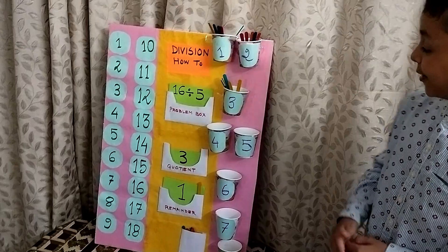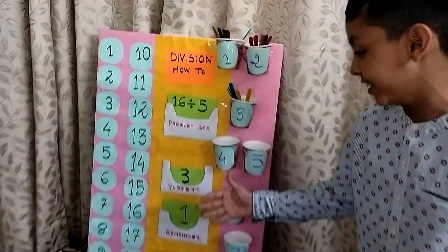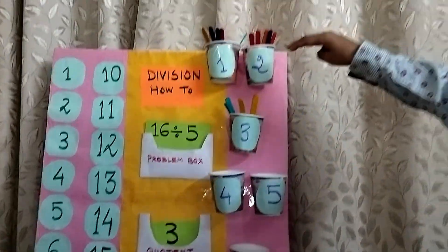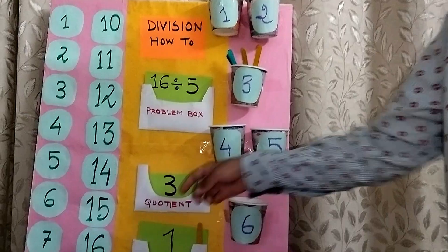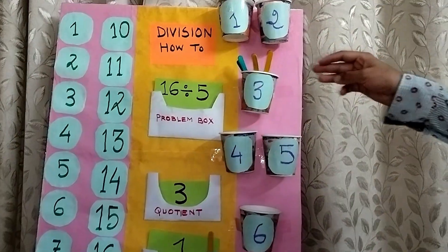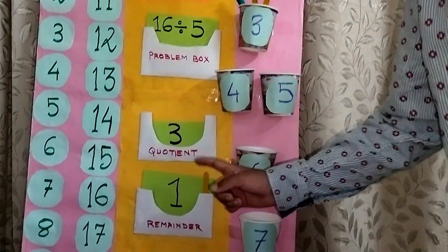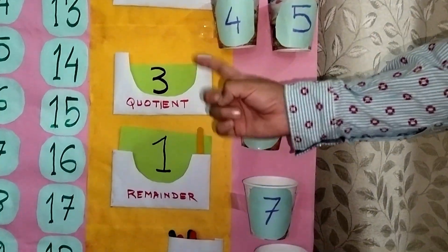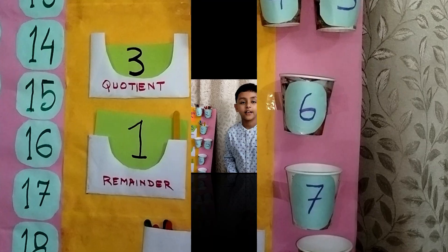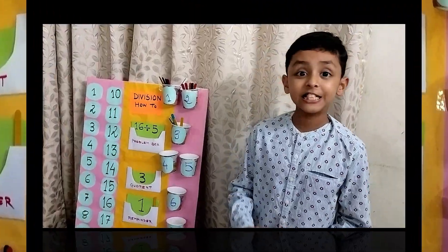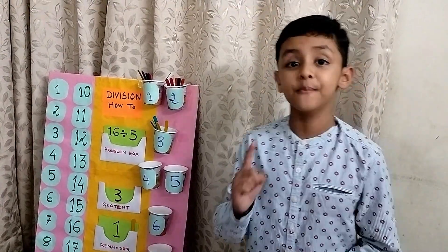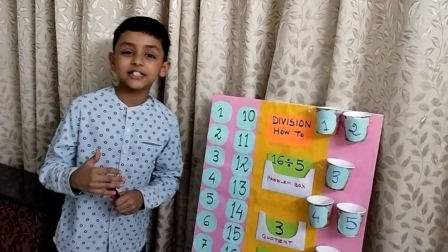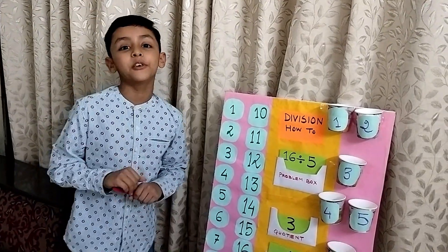Now you can see we filled up three boxes, so the quotient is three. And there's only one stick left, so the remainder is one. I will show you one more example, friends.